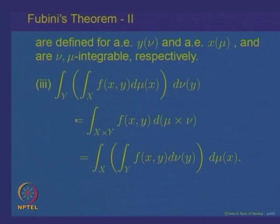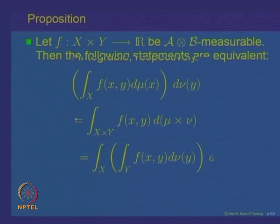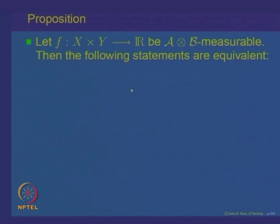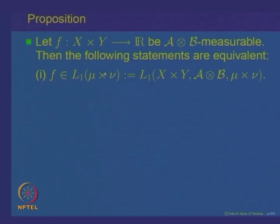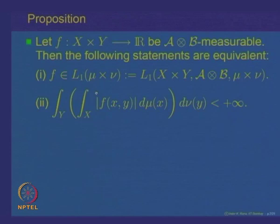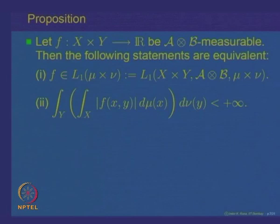We want to give one more version of this theorem. To do that, we need to prove a proposition about integrable functions on the product space. Given f on the product space X×Y, the following conditions are equivalent: (1) f belongs to L¹; (2) the iterated integral of |f(x,y)| first with respect to x and then with respect to y is finite; (3) the iterated integral of |f(x,y)| first with respect to y and then with respect to x is finite.